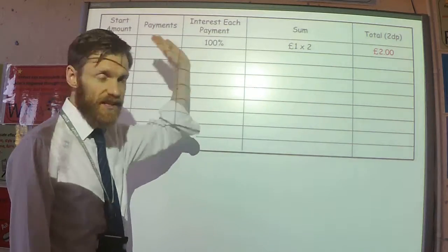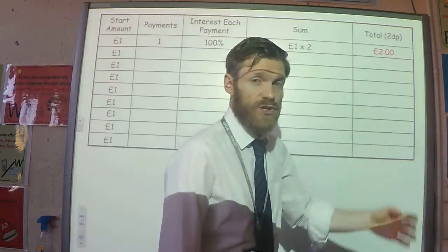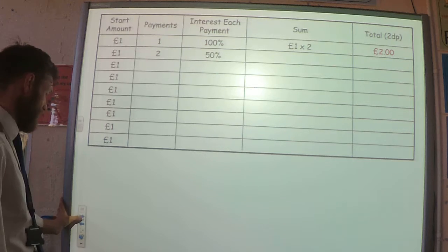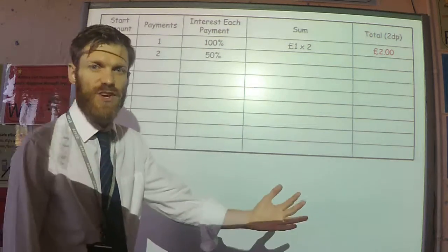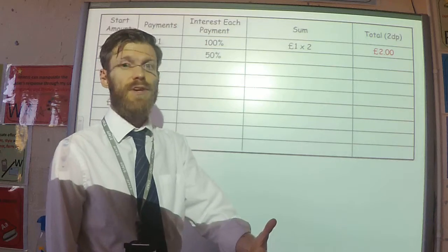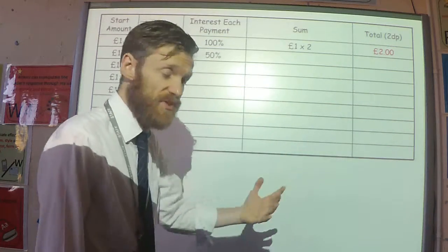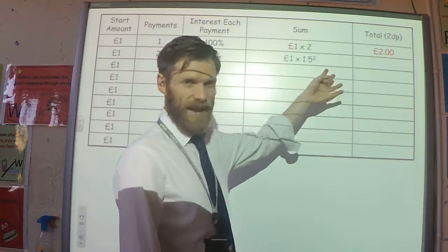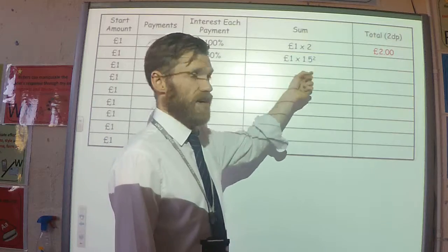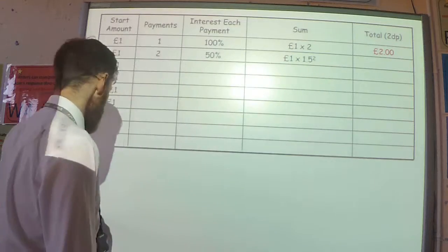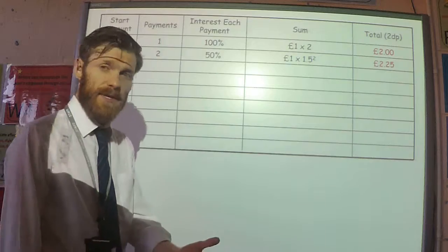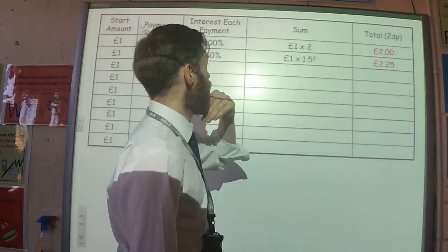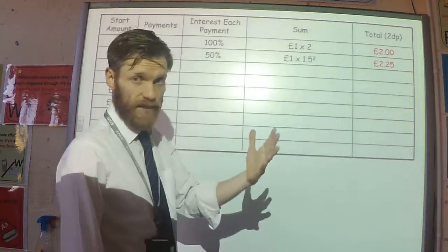If you have one payment of 100%, that's going to get you two pounds. What about if we have two payments of 50%? If I increase something by 50%, the multiplier is 1.5. So to work this out, I do my original amount — one pound — multiplied by 1.5 squared, because I'm having the 50% twice, so 1.5 times 1.5. If I work that out, I get £2.25. So it's a better deal — an extra 25p.